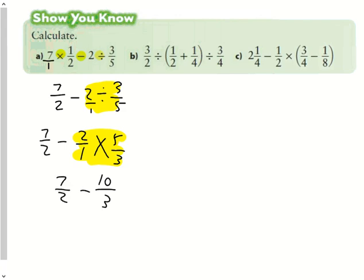And we have 7 halves, take away 10 thirds. So now we have accomplished all of our grade 8 outcomes with the multiplication, and all we have now is a grade 7 outcome of how to subtract fractions. Denominators of 2 and 3, the first multiple they share is 6.